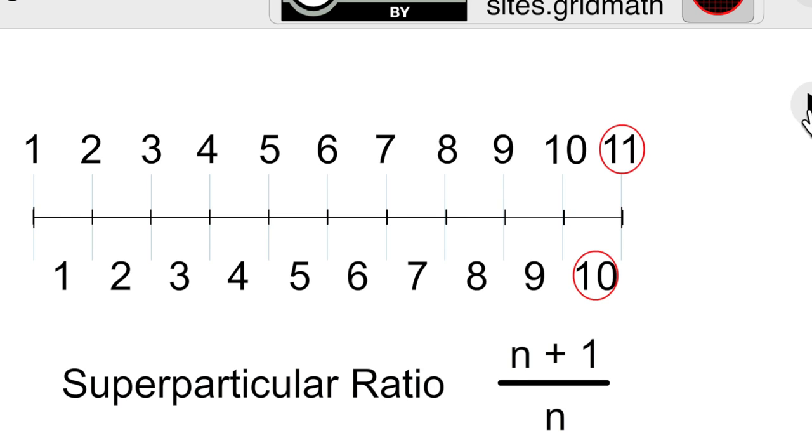Now you can call it a super particular ratio or fence post and rail. Depends on how particular your audience is. Either way, n for the number of intervals requires n plus 1 for the number of points.